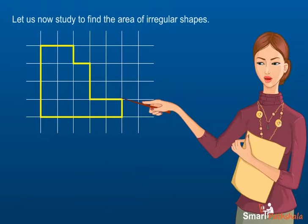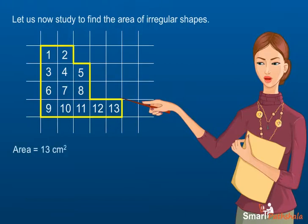To find the area of this shape we need to count the number of squares that are covered by this shape. The total number of squares is 13. So the area is equal to 13 square centimeter.